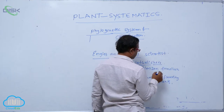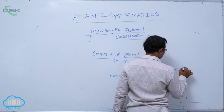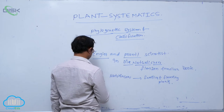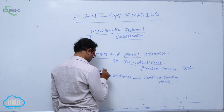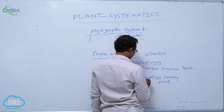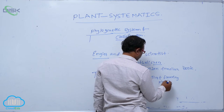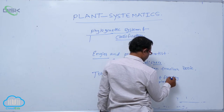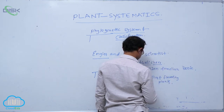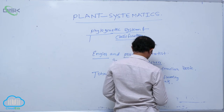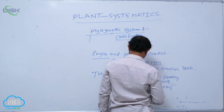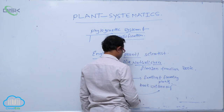They explained the evolutionary characters in that book. After that, John Hutchinson explained the evolutionary characters in his book 'Families of Flowering Plants', written by John Hutchinson.